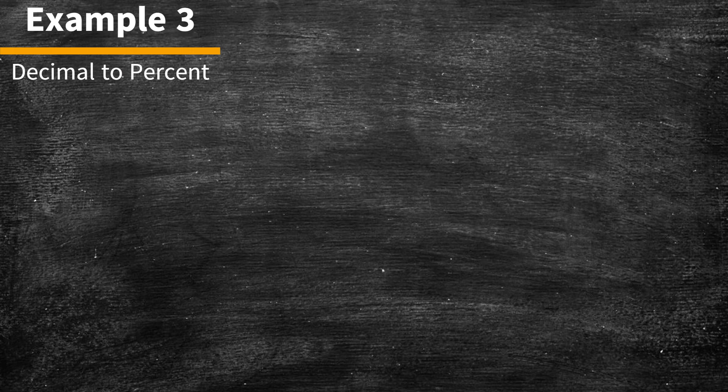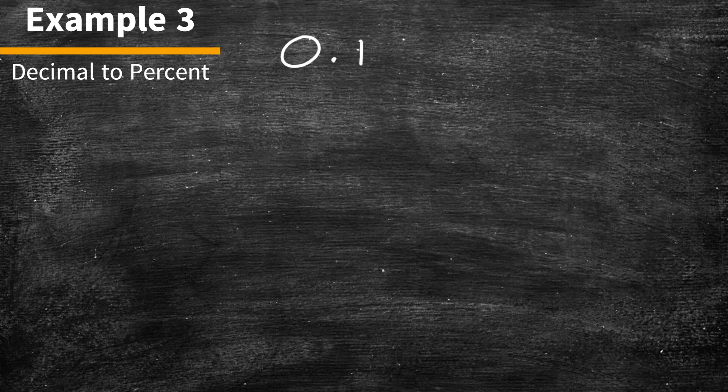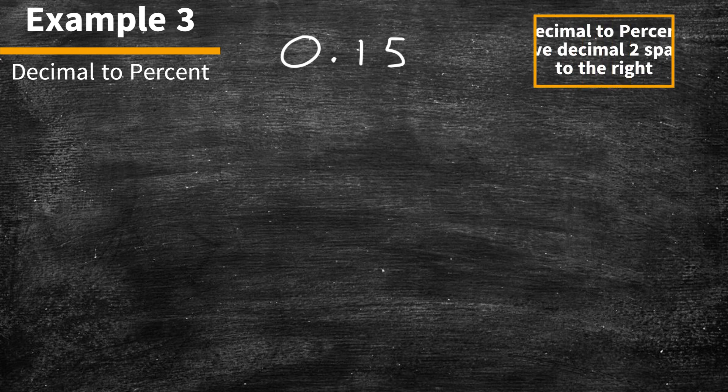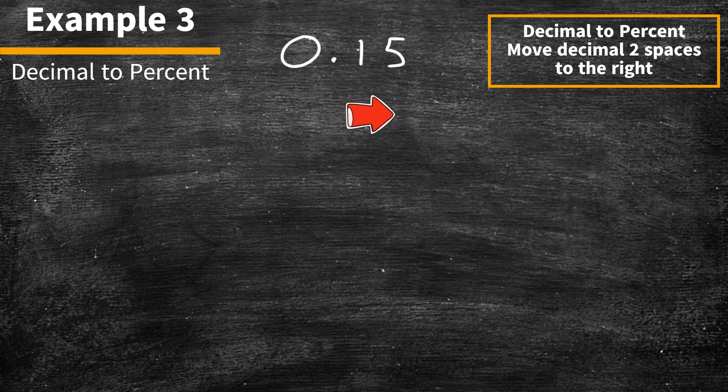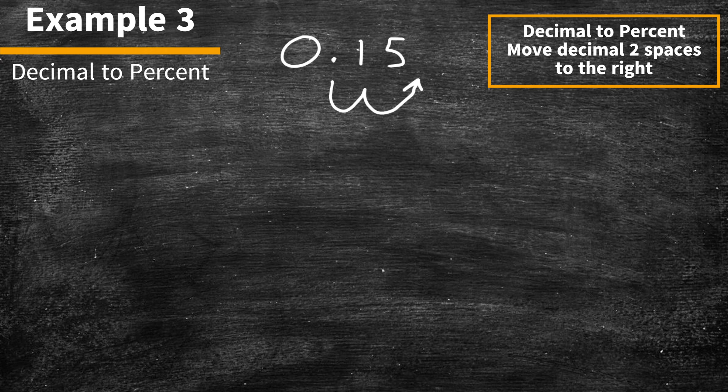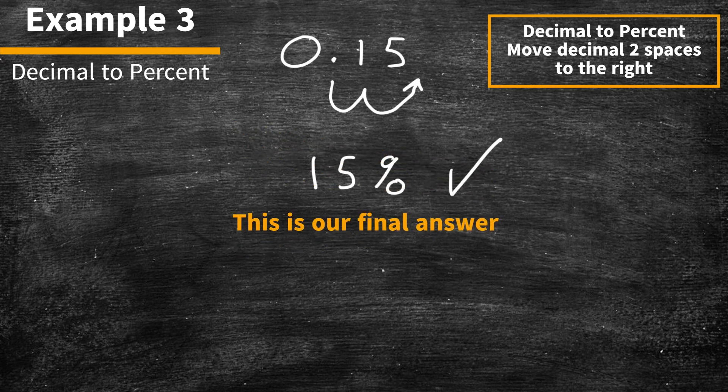Example number 3. Decimal to percent. Let's look at our previous example, 0.15. To convert a decimal to a percentage, we move the decimal point two spaces to the right. 1, 2. Then we add a percent sign. 15% is our final answer.